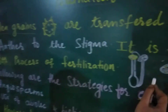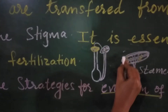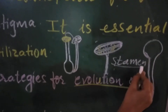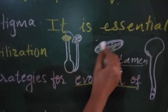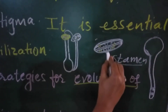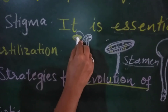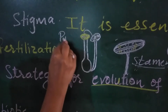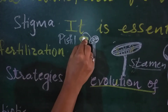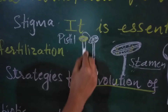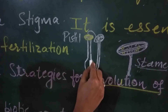In the previous lecture, you had studied about the structure of androecium — also called stamen — which consists of anther and filament, while gynoecium or pistil consists of stigma, style, and ovary.